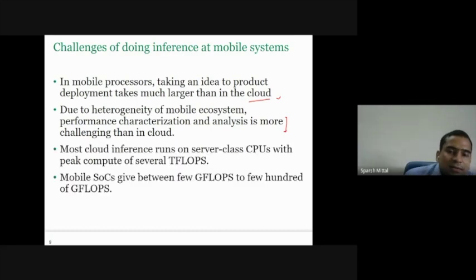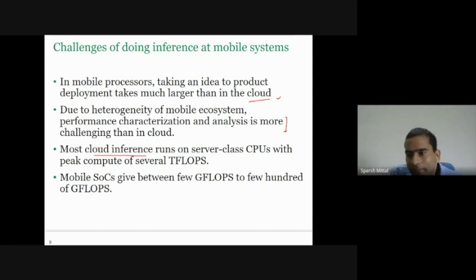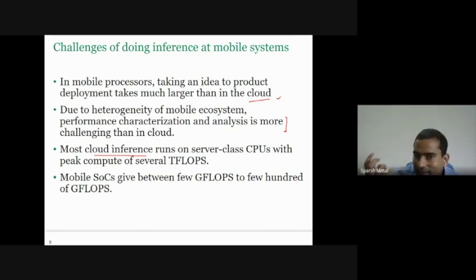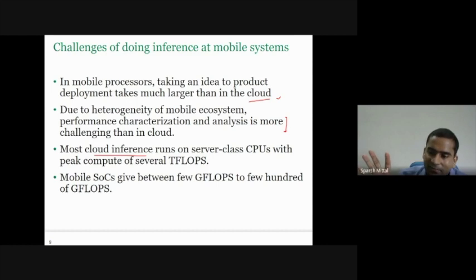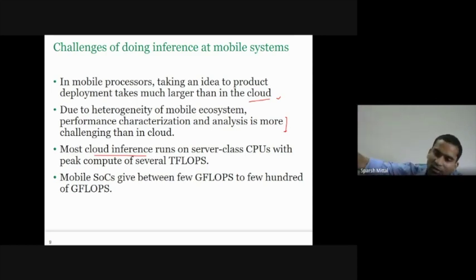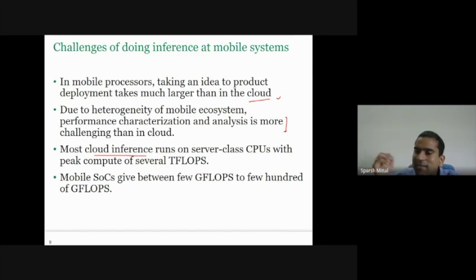Most cloud inference runs on server-class CPUs. In machine learning, there is a training phase and an inference phase. In training, we train the model and find the weights. In inference, we use the trained model for prediction or classification. For example, Alexa records your speech, sends it to the data center over Wi-Fi, and inference happens in the cloud — that response is called cloud inference. Cloud inference runs on high-end CPUs with very high peak compute power — several teraflops — whereas mobile phones have performance in gigaflops.